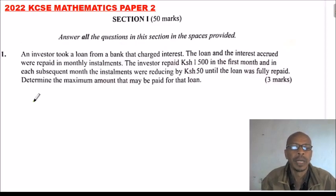This is 2022 KCSE Mathematics Paper 2, Section 1, which consists of 50 marks. You are supposed to answer all the questions in the spaces provided. It consists of 16 questions I've added, 2, 3, 4 marks to the maximum.